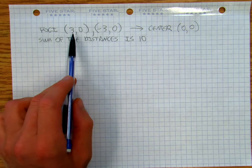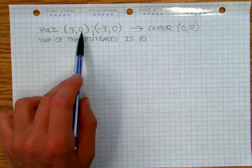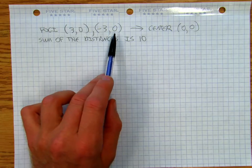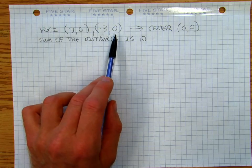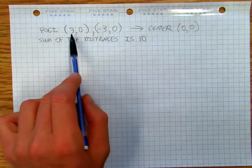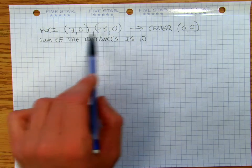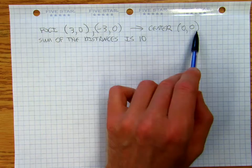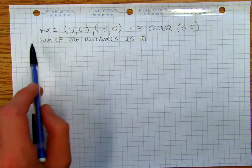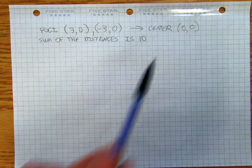And we're going to say that the location of the two of them are at 3, 0 and negative 3, 0. And halfway between those is going to be the center. So the center is going to be halfway between those two points, which is 0, 0, making it easy. And then the sum of the distances is 10.